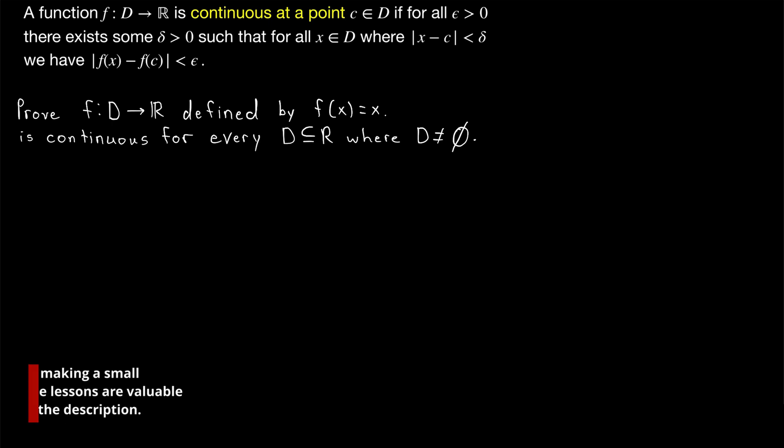Let's get some practice with the epsilon delta definition of continuity by proving that a simple function is continuous on its entire domain. We're considering the identity function f of x equals x on any non-empty domain that's a subset of the real numbers.